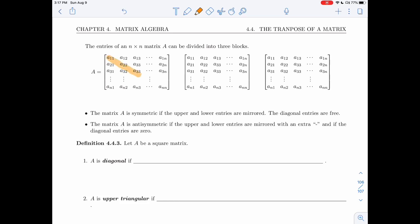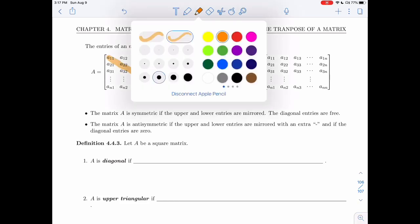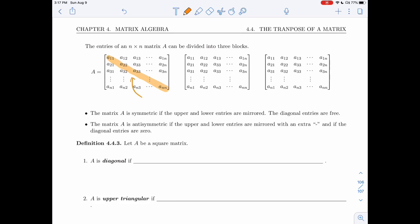So first, you have these entries, which are called the entries of the main diagonal.